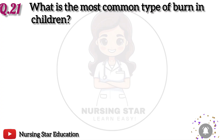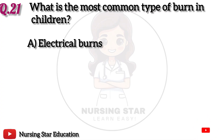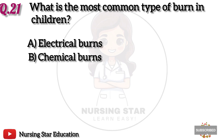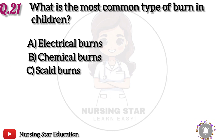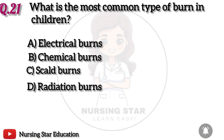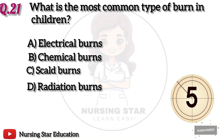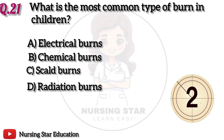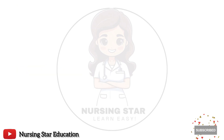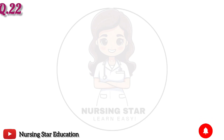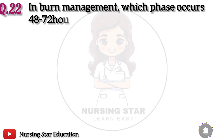Question 21: What is the most common type of burn in children? Option A: Electrical burns. B: Chemical burns. C: Scald burns. D: Radiation burns. The correct answer is C: Scald burns.